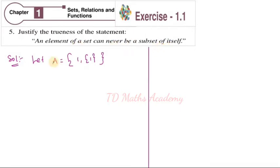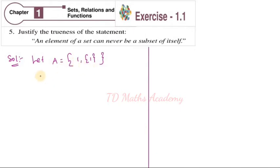Before understanding the statement, I am teaching one example. Listen carefully. I am taking A equal to the set containing 1 and also the set {1, 2}. So set A has two elements: the number 1 and the set {1, 2}. Set {1} is an element of A.